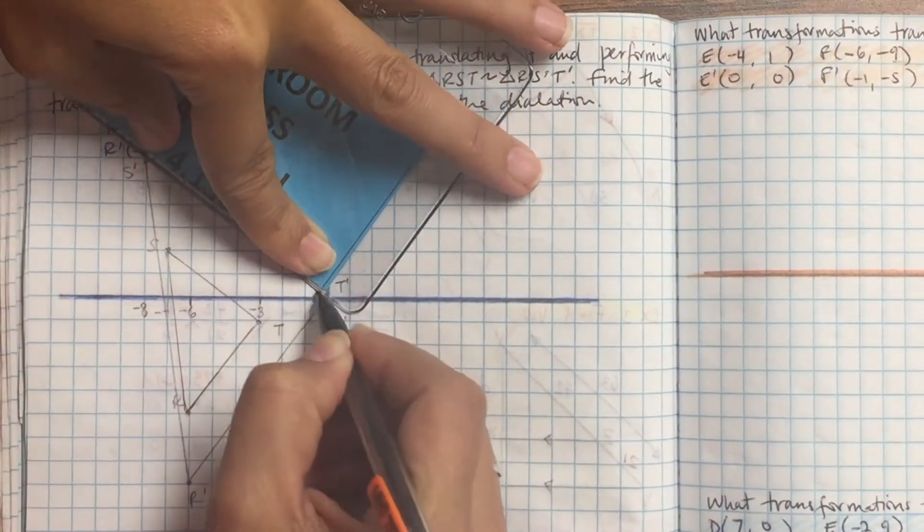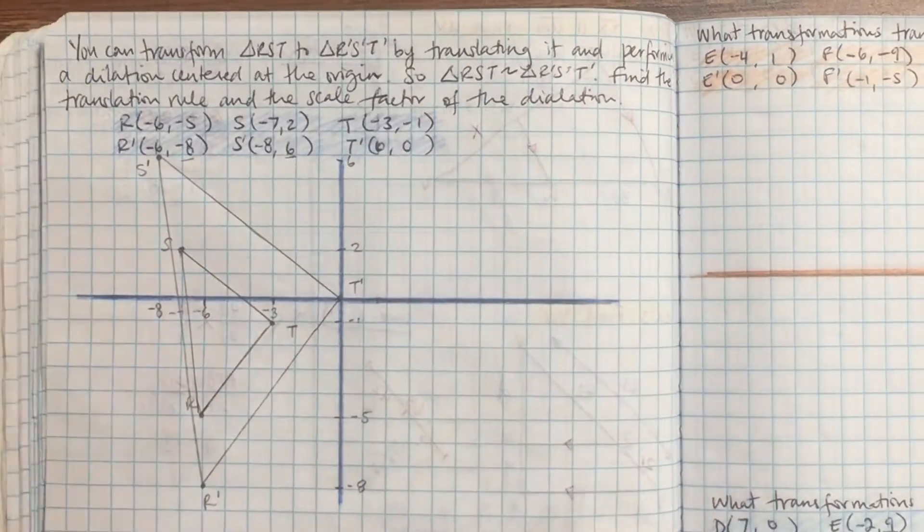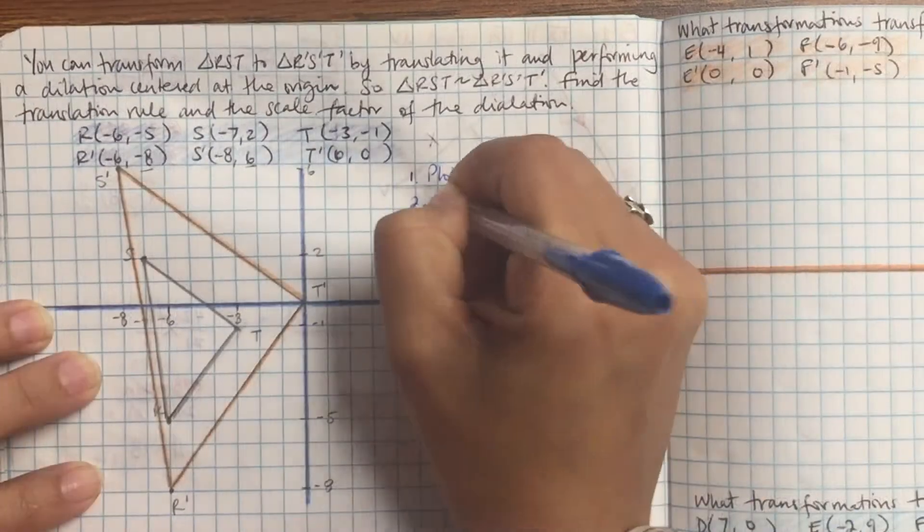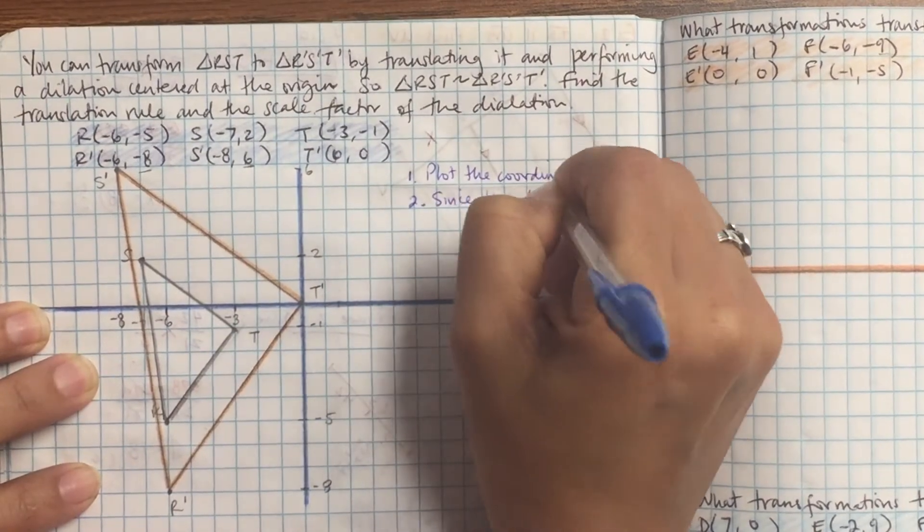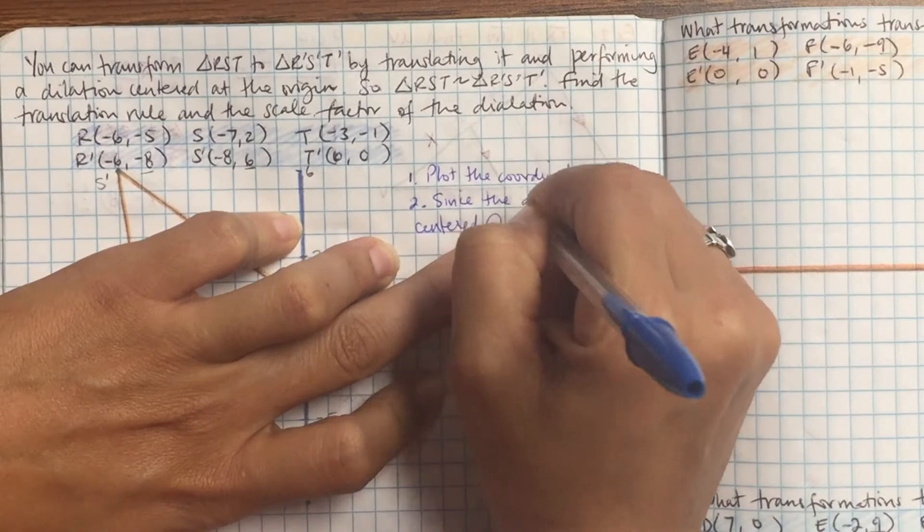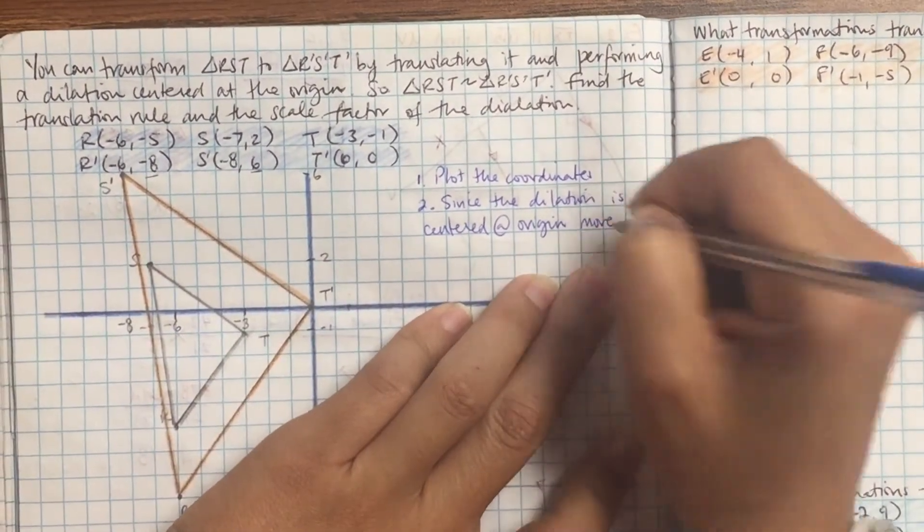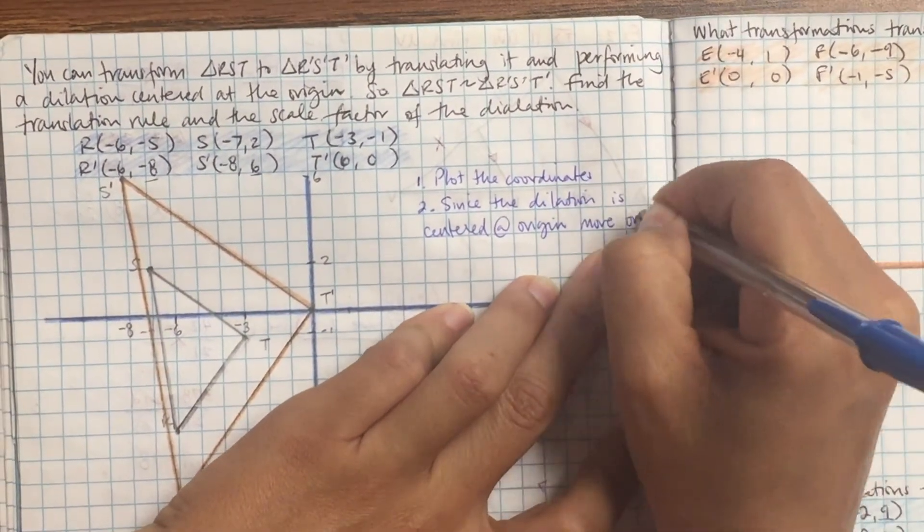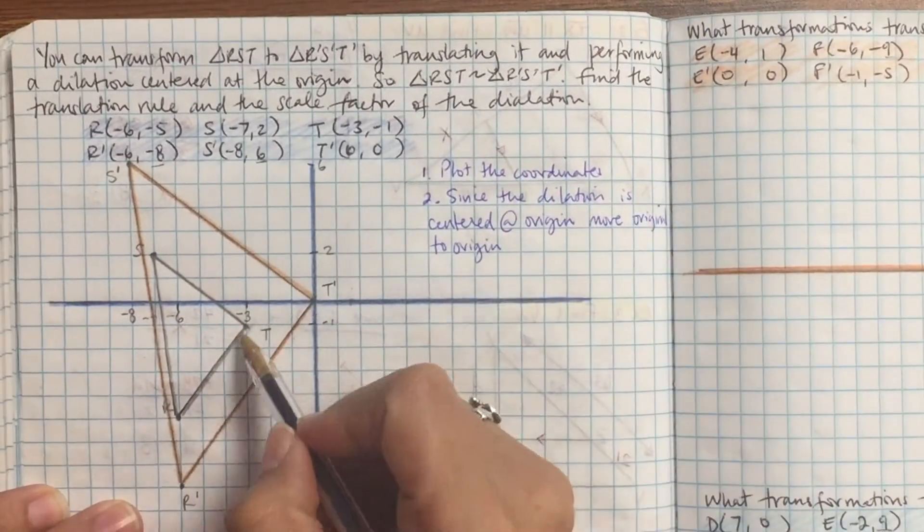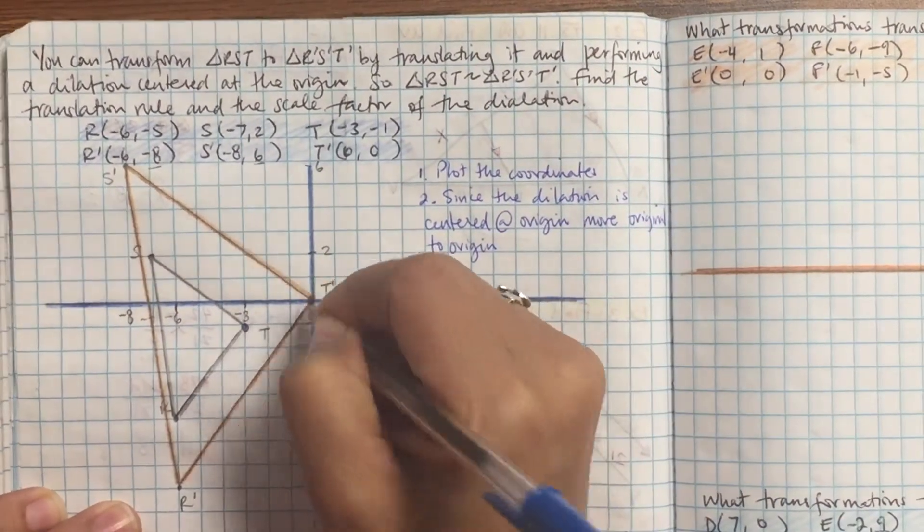So let's color in the smaller of the two triangles. Alright, so first step is always going to be plot the coordinates. So they don't always give you a graph, you need to get used to drawing it for yourself. Plot the coordinates. Alright, so number 2, since the dilation is centered at the origin, you can move the point to the origin. In other words, move T to T prime and then just write the translation rule.